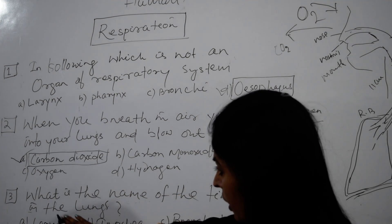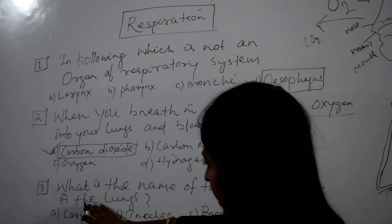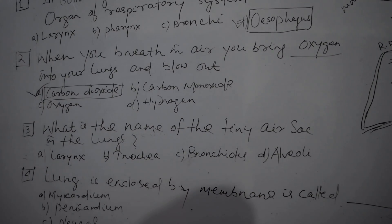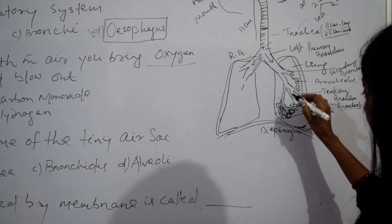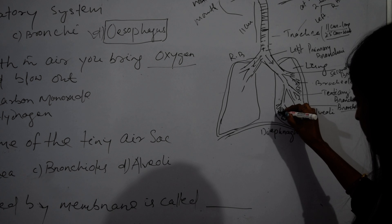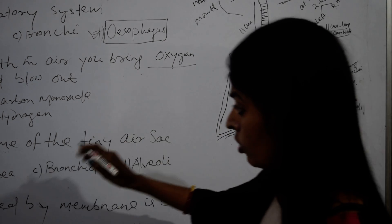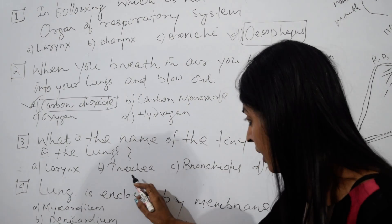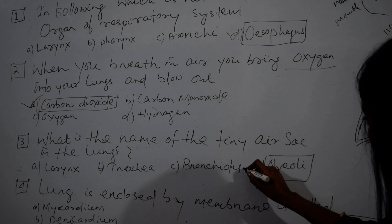Question 3: what is the name of the tiny air sacs in the lungs? We have already discussed that the air sacs are the alveoli.